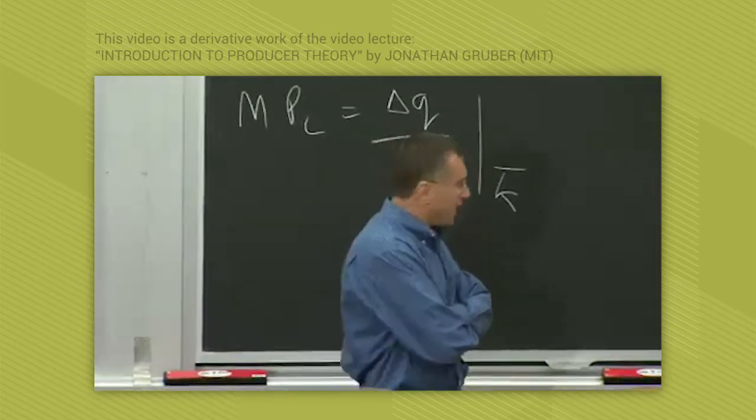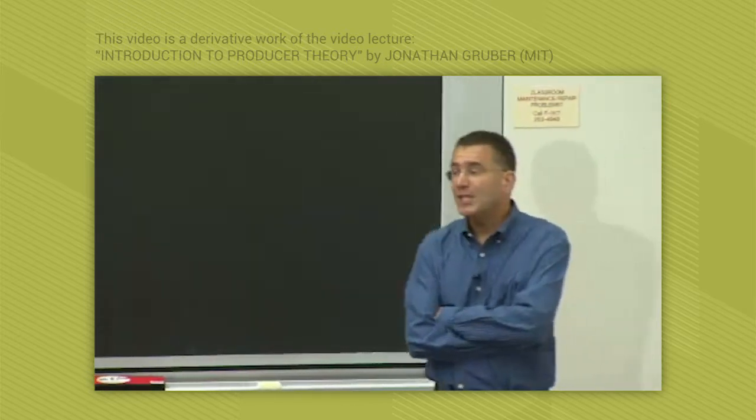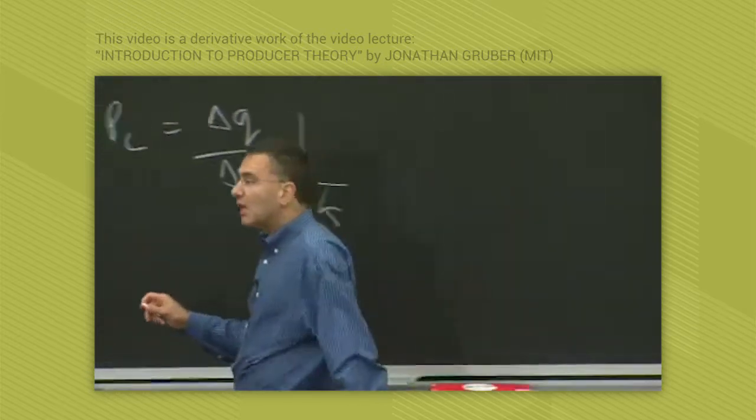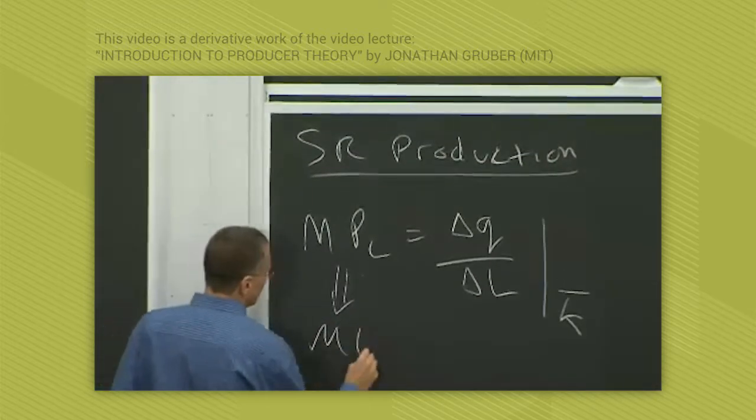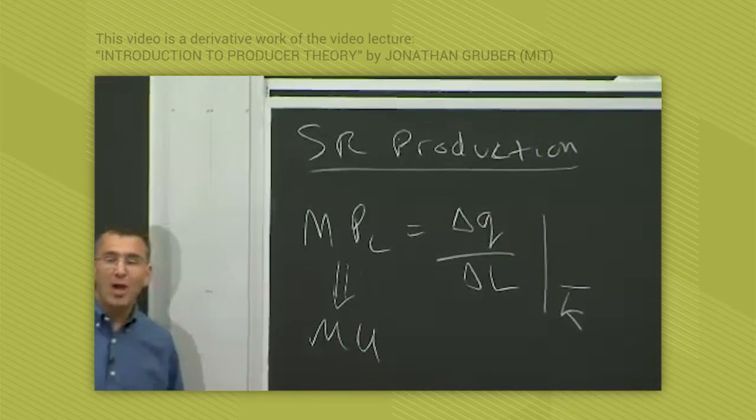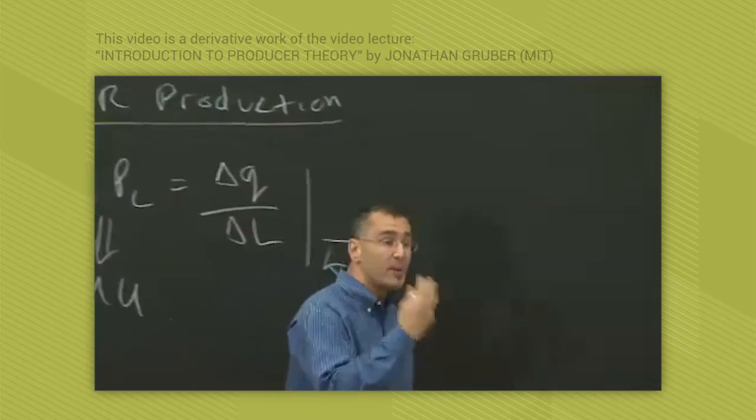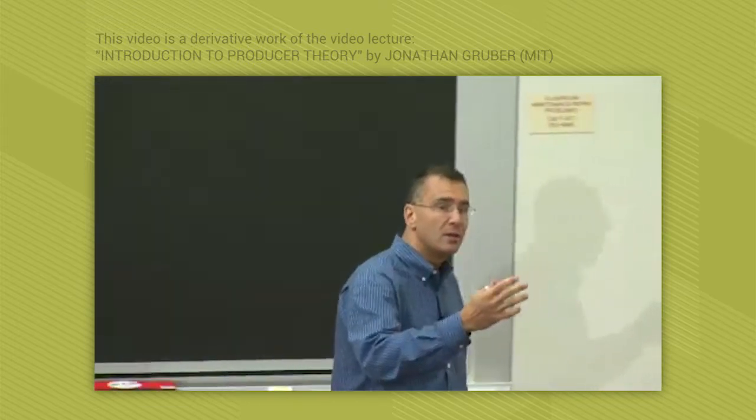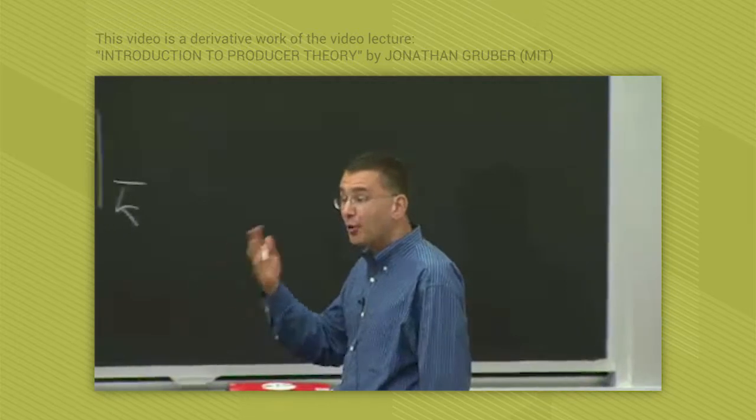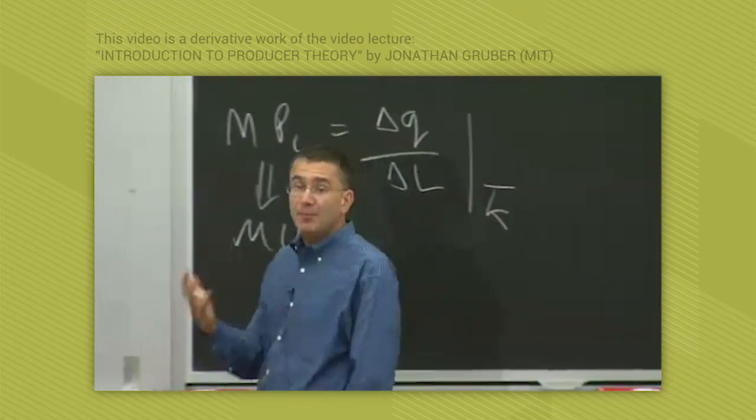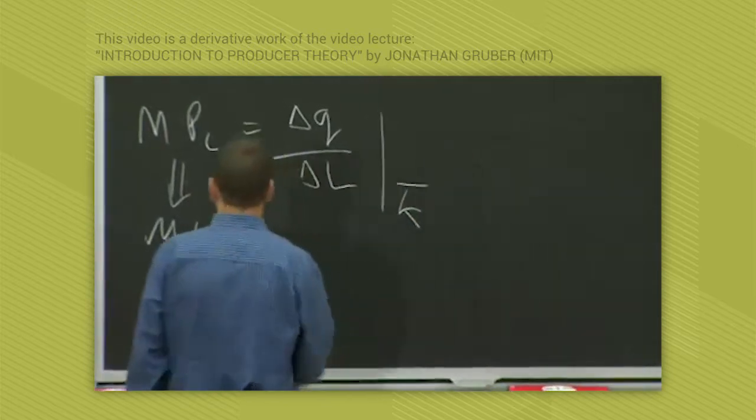If you're comfortable with consumer theory, marginal product is like marginal utility. Just as marginal utility was your utility from another unit of one good holding the other good fixed, marginal product is the marginal production from another unit of an input holding the other input fixed. Just a parallel to keep in mind.